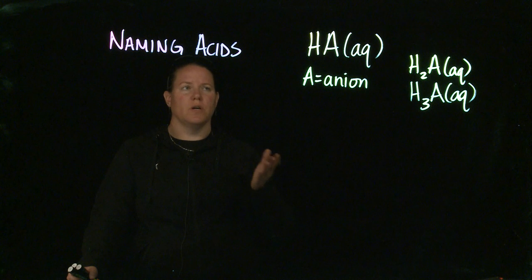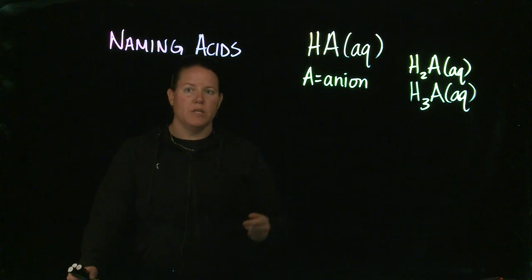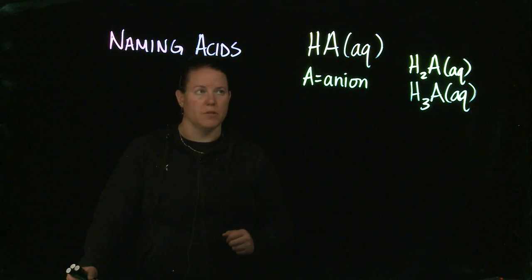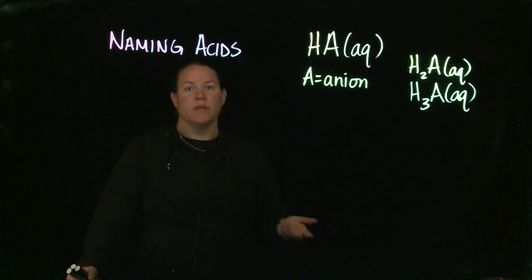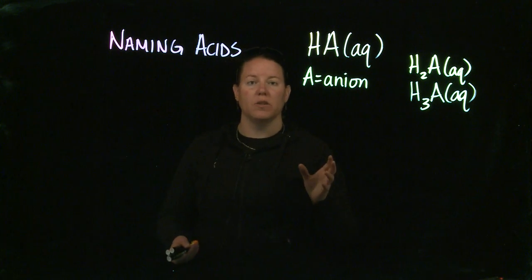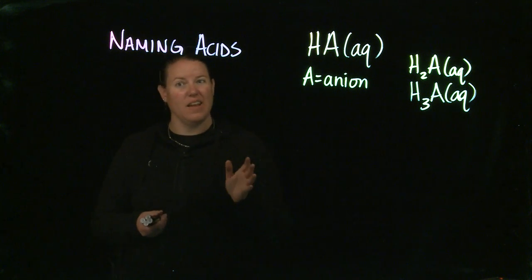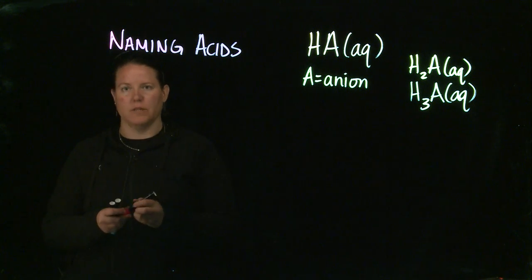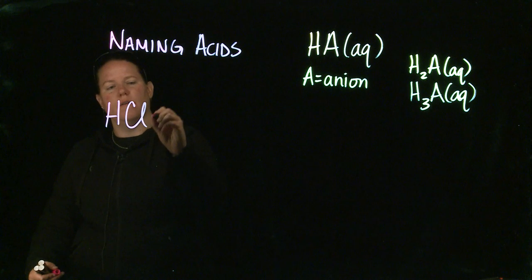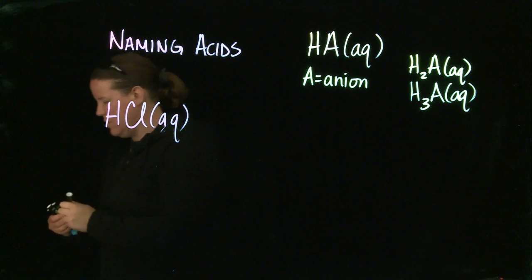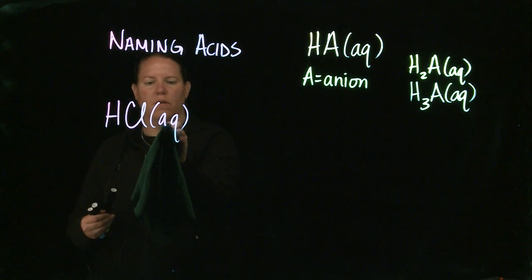When we're talking about naming acids, we're talking about the ones that have the H's in front. Because H is in front of every acid that we're going to be talking about in beginning chemistry, we do not name acids based off of the H in front. That is a given by putting the word acid afterwards. What we're going to do instead is we're going to base our name on the anion, and not any part of the anion. We're going to base it off of the ending of the anion. So let's take three examples.